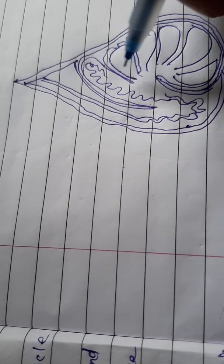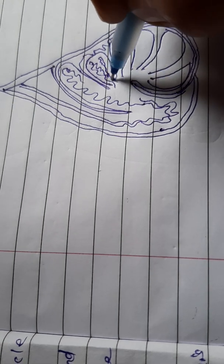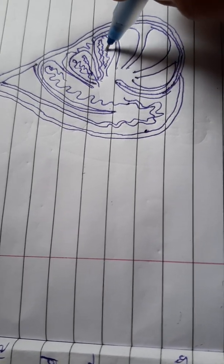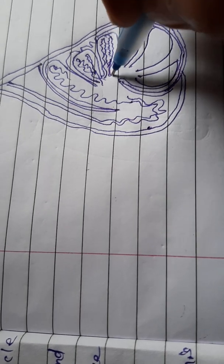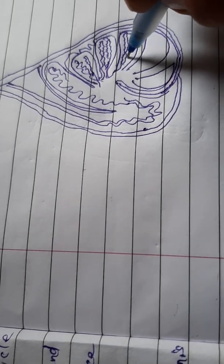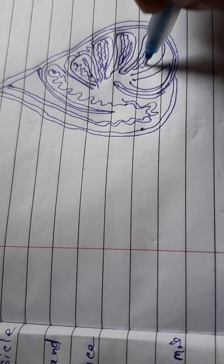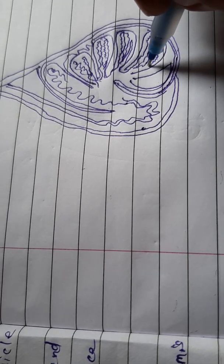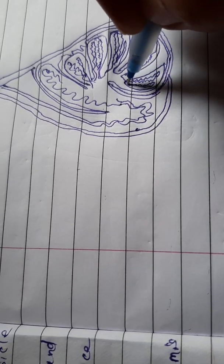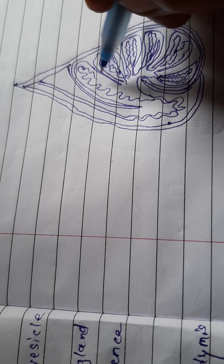After that draw seminiferous tubules. Each lobule you should draw two to three seminiferous tubules. These are seminiferous tubules, okay. Continue and attach it, and attach it. After that draw small lines.